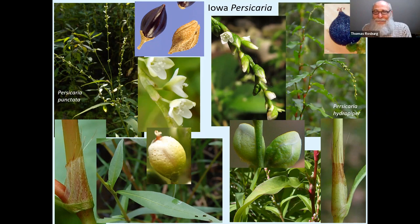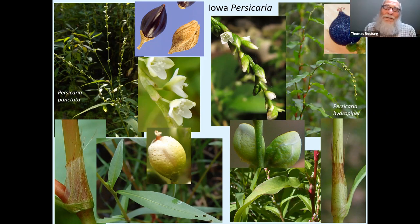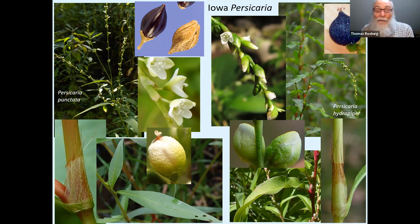Someone asked what the purple color on Minnesota in the distribution maps for non-native species means. Purple color on Minnesota means it's listed as a noxious weed by that state.